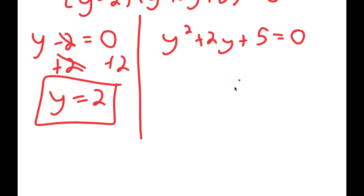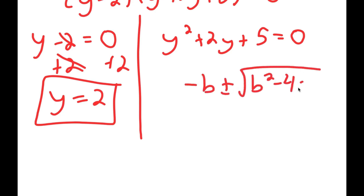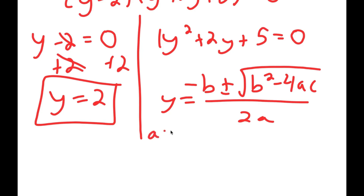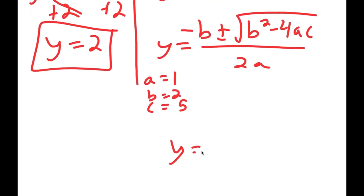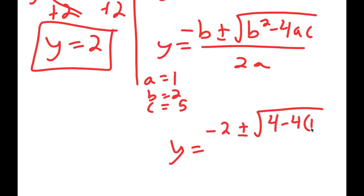For y squared plus 2y plus 5 equals 0, I'm going to use the quadratic formula, which is negative b plus or minus the square root of b squared minus 4ac, all over 2a. In this case, a is 1, b is 2, and c is 5. So I get y is equal to negative 2 plus or minus the square root of 2 squared, which is 4, minus 4 times 1 times 5, all over 2 times 1.